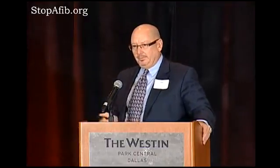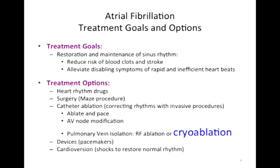When we look at AFib, our goal is to restore and maintain sinus rhythm, both to hopefully reduce the risk of blood clots and stroke, and more importantly to alleviate the disabling symptoms of rapid and inefficient heartbeats that occur with AFib. The options include heart rhythm drugs, surgery including the maze procedure or variations of that, and two catheter ablation treatments we utilize to correct rhythms with invasive procedures.